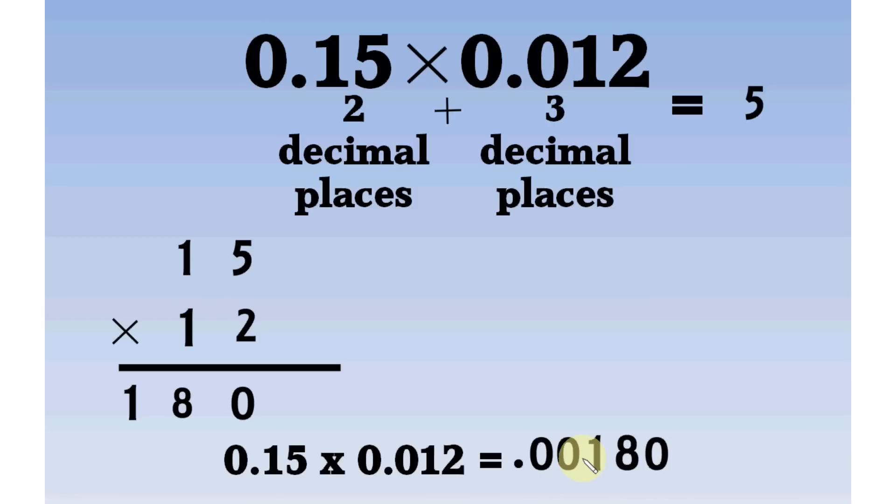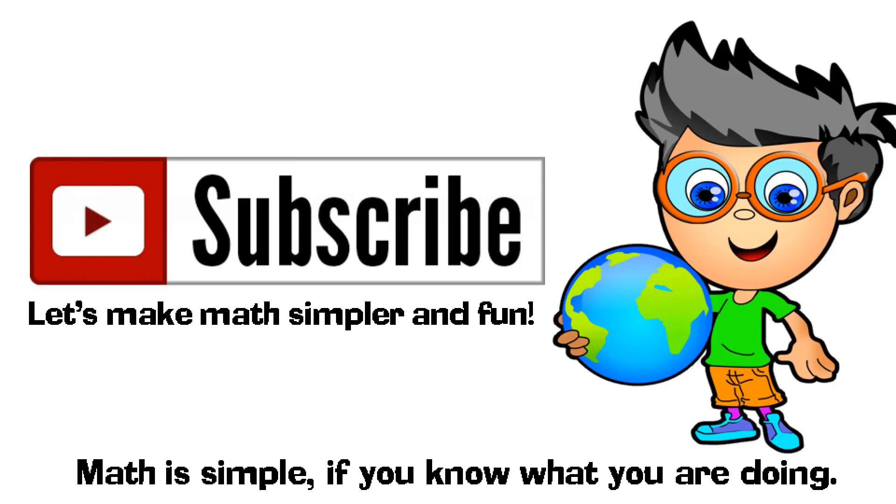So, add number of decimal places of all the numbers you multiplied, to get number of decimal places in final product. Hope I could help you. Have a nice day.